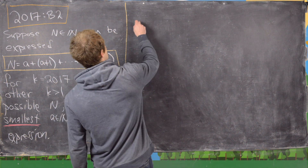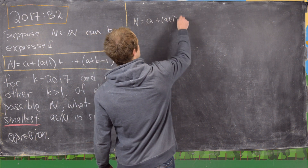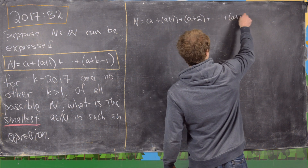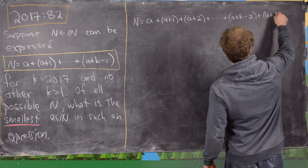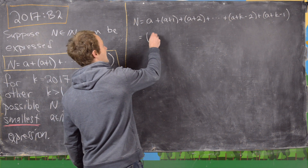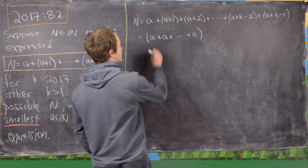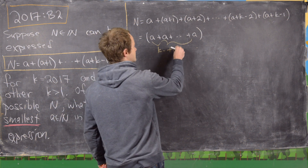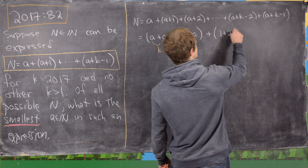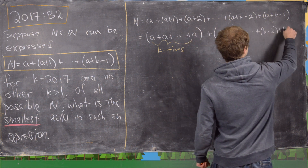The first thing we want to notice is that we can write n as a plus a+1 plus a+2 all the way up to a+k-2 plus a+k-1. We can rearrange this by putting all the a's together — there are clearly k of them — and then we also have this triangular number: 1 plus 2 plus 3 plus up to k-2 plus k-1.